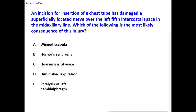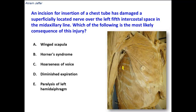An incision for insertion of a chest tube has damaged a superficially located nerve over the left fifth intercostal space in the mid-axillary line. We are looking for a nerve that is located just beneath the skin, in a superficial location, in the mid-axillary line, and in the fifth intercostal space — because chest tube insertion is usually done in the fifth or sixth intercostal spaces in the mid-axillary line.